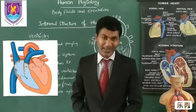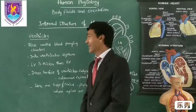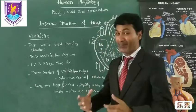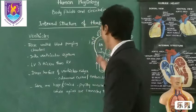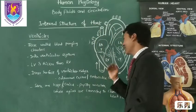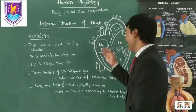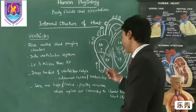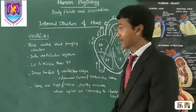The lower two chambers of heart known as ventricles, which are thick-walled and blood-pumping chambers. Compared to the atria, these are larger in size. Atria receives the blood from the body parts, whereas ventricles pump the blood into the body parts.